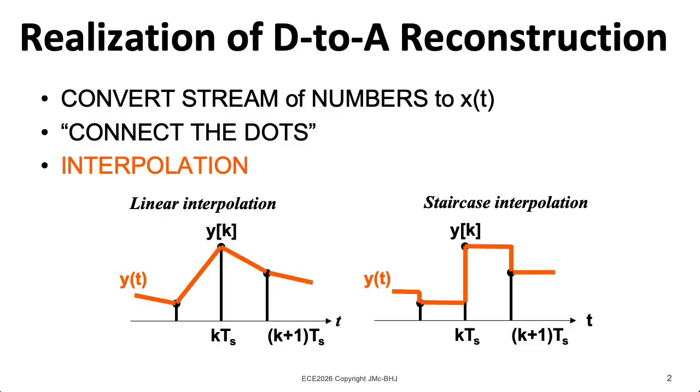What's called the staircase interpolation on the right is also called a zero-order hold, where we just take the sample and hold it until the next sample appears. And this is traditionally the first stage of digital analog conversion for audio signals, although this is just the first stage.